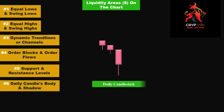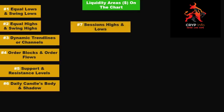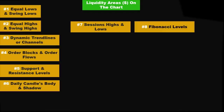Daily candle body and shadow: liquidity can be present near the body or shadow of daily candles, as these areas reflect price rejections and trading activity. Sessions highs and lows — the high and low points of trading sessions — can represent liquidity zones due to increased trading activity and participant involvement. Traders also look for liquidity around key Fibonacci retracement or extension levels, as these levels are commonly monitored and traded.